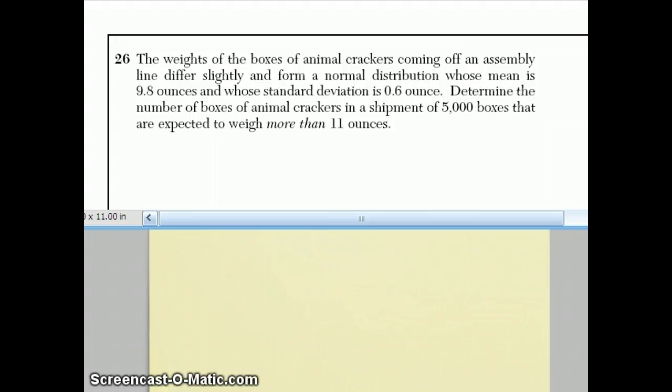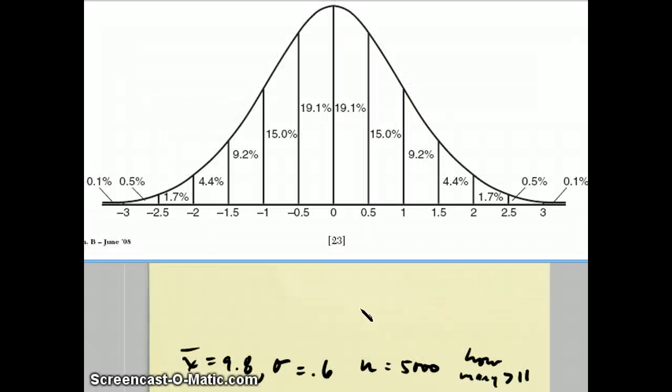Question 26 is a statistics question. It says, the weights of the boxes of animal crackers coming off an assembly line differ slightly and form a normal distribution, whose mean is 9.8 and whose standard deviation is 0.6 ounces. Well, the way you deal with those numbers is, in the back of the Regents booklet, there's a chart. The chart looks like this. And what we do is 9.8 goes underneath the 0. This 0.6 standard deviation, that tells me that underneath the 1, I'm going to add 0.6 to 9.8, which will become 10.4. And then underneath the 2, I'm going to add another 0.6 to become 11.